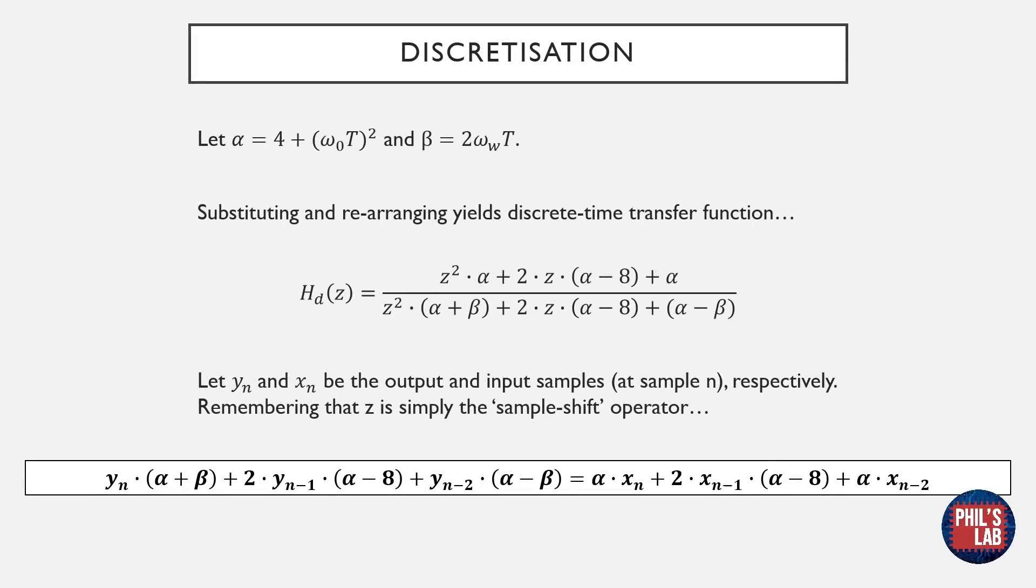I've done the maths for you, since it would otherwise take up a fair bit of time in this video. We can make our lives a bit easier by defining two constants, alpha and beta, which are defined up here. Substituting the expression for the Tustin Transform as shown before yields the discrete time transfer function in the Z domain.